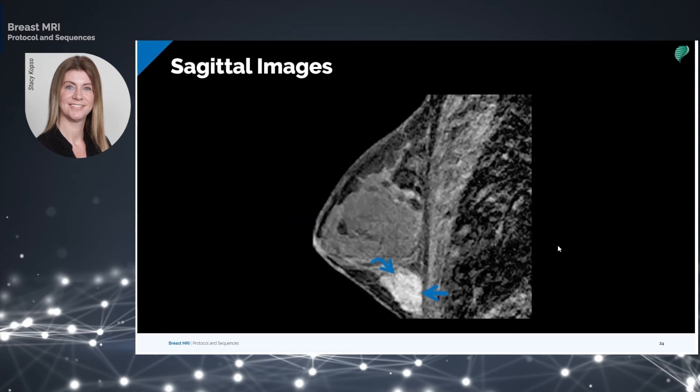Sagittal images are taken of each breast alone because of the large number of slices needed to cover the entire field of view. One stack could require double the number of slices. This also hampers the spatiotemporal resolution.